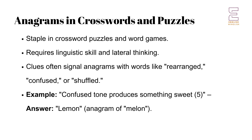Crossword clues that involve anagrams often signal this with indicators like 'rearranged', 'confused', or 'shuffled'. For example, a crossword clue might be 'confused tone produces something sweet', leading to the answer 'lemon', which is an anagram of 'melon'.